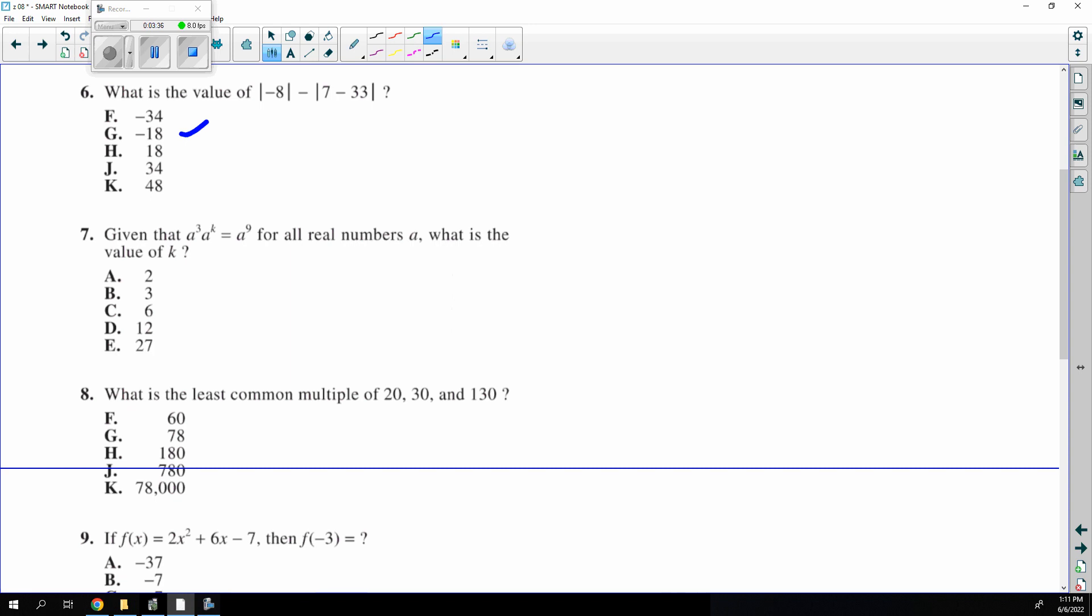This you got to think a little bit. It's multiplication. So you add the exponents. So 3 plus K has to be 9. So K has to be 6.